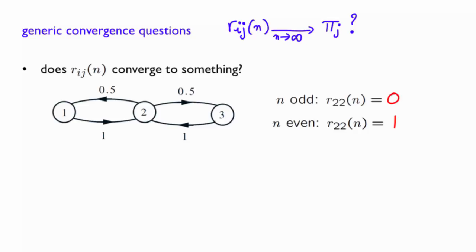That chain has a periodic structure and we will see in the next lecture that if periodicity is absent from a chain, then we don't have a problem with convergence.